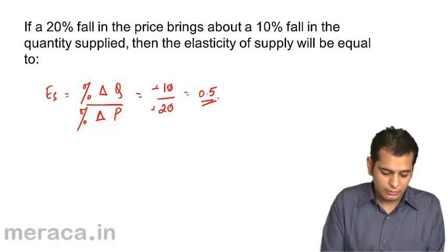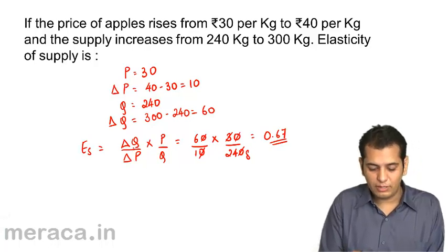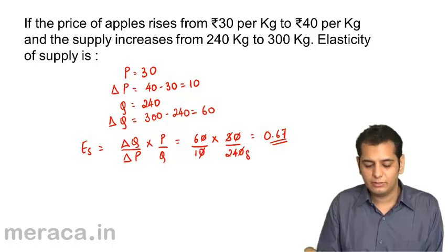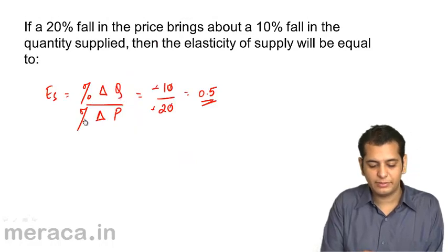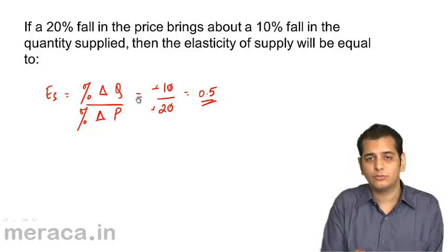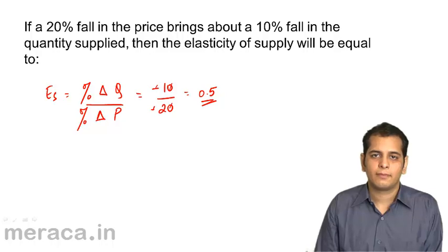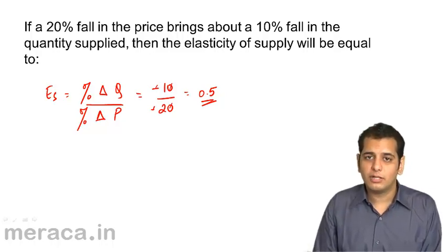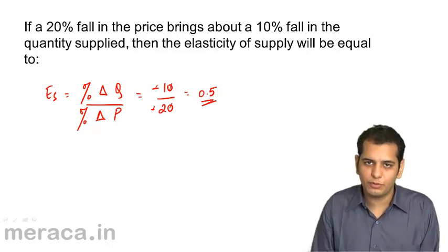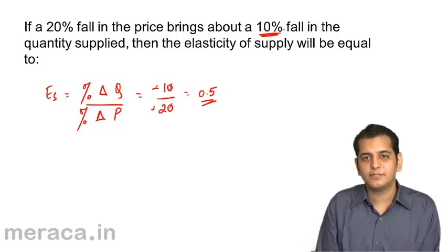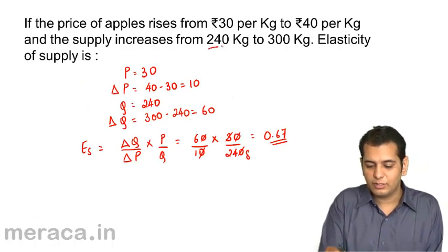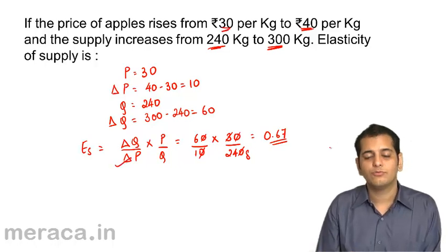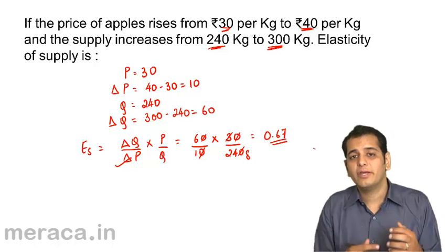Please note: in the previous question I used the formula — change in Q divided by change in P, multiplied by P by Q — and in the current problem I used the formula — percentage change in quantity divided by percentage change in price. Both formulas are the same, but for convenience, depending on the problem, we choose accordingly. Where the problem directly gives percentages, we use the percentage formula; where the problem gives actual figures, we use the other formula. This makes our work easier.